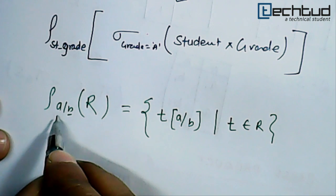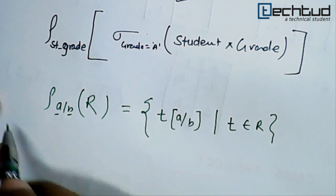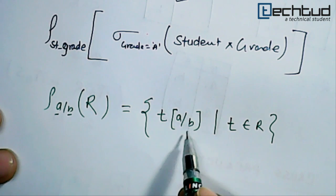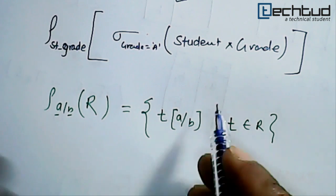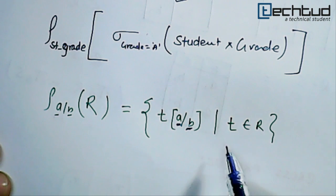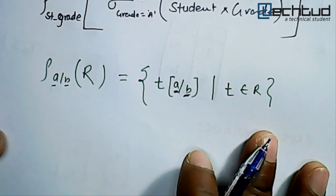This attribute b will be renamed as a. So the resultant will be a tuple where this attribute will be renamed as a, and the tuple belongs to relation r, obviously.